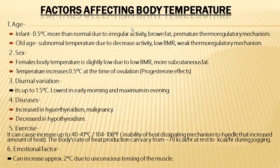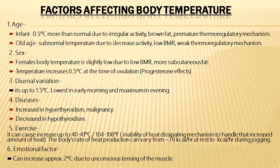Factors that affect body temperature include age, sex, diurnal variations, diseases, exercise, and emotional factors — six factors in total. Regarding age: infants usually have about 5 degrees higher temperature than adults due to irregular activity, presence of brown fat, and premature thermoregulatory mechanisms. Elderly people have subnormal temperatures due to decreased activity, low basal metabolic rate, and peak thermoregulatory mechanism decline.